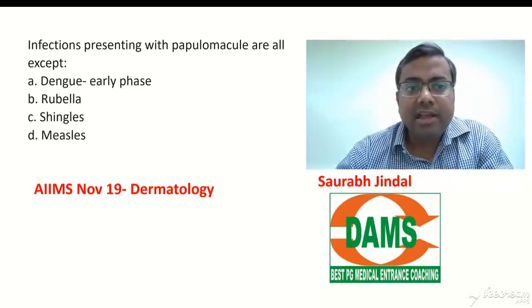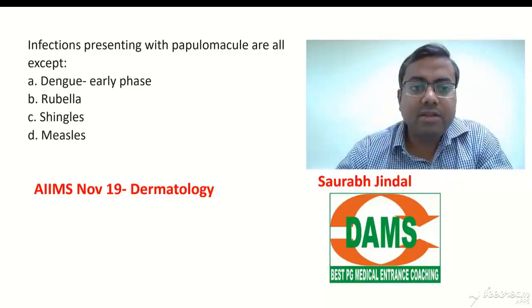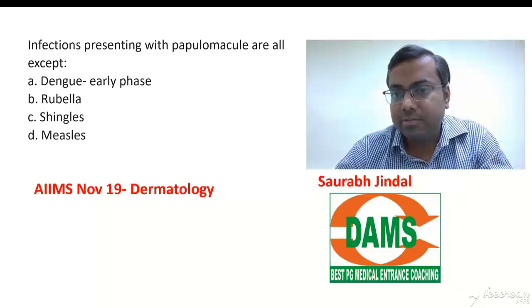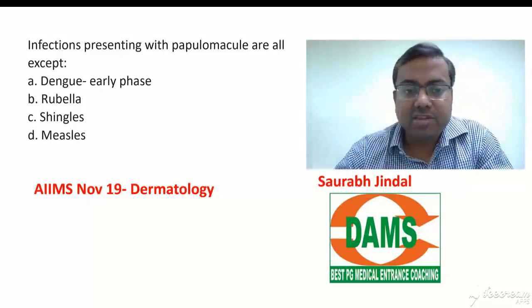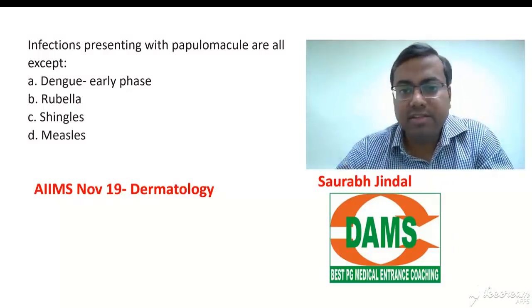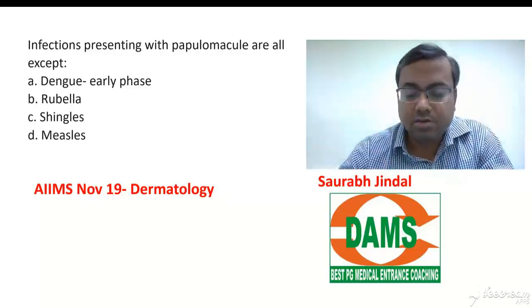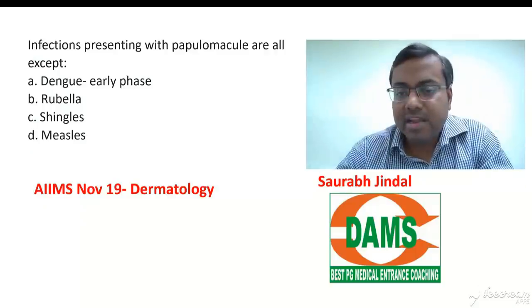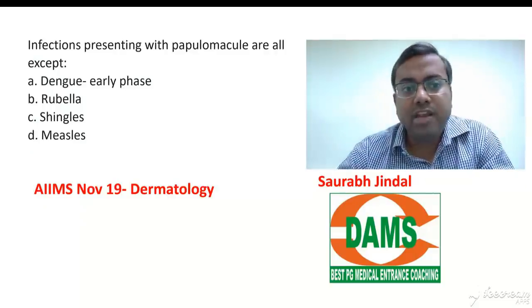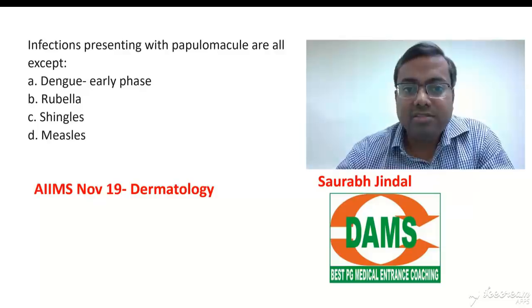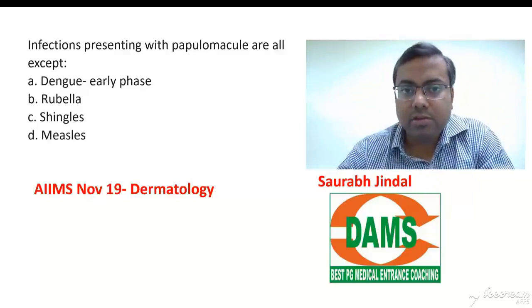Measles is also similar to rubella with a prodrome. You all know about Koplik spots, which come during the prodromal phase, and then the rash appears. The measles rash is cephalocaudal but slower than rubella — we expect it to go in about five to six days, compared to two to three days for rubella. All three of these rashes — dengue, rubella, and measles — are maculopapular rashes.